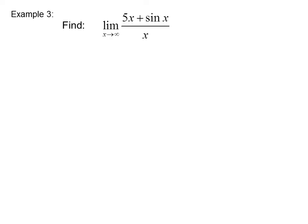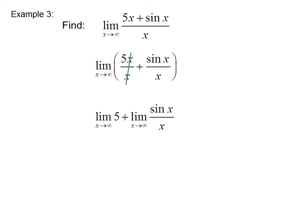Example 3: Find the limit as x goes to infinity of (5x plus sin x) all over x. We can split this fraction up, giving us the limit as x goes to infinity of 5x over x plus sin x over x. In the first term the x's cancel out, and we can separate the two limits. The limit as x goes to infinity of 5 is just 5, and we just found the limit as x goes to infinity of sin x over x equals 0. So we get 5 plus 0, or 5.